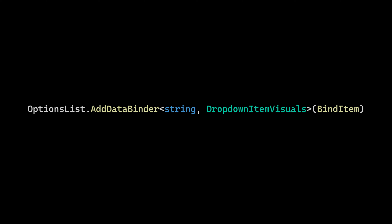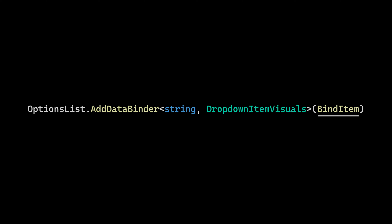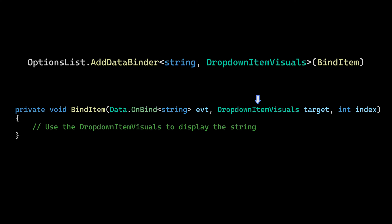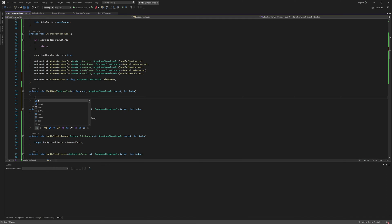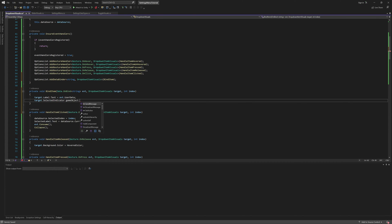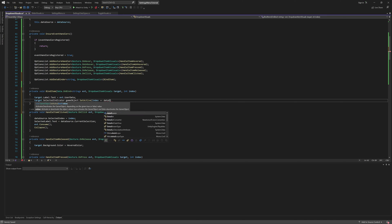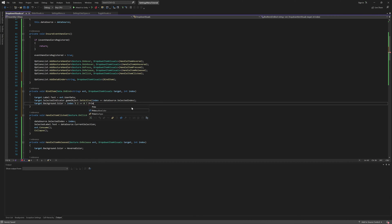The addDataBinder method is a method with two generic arguments. The first generic argument is a data type in the data source, and the second generic argument is the type of the item visuals that we want to use to represent that data type. By calling this method with these arguments, we're telling the list view: whenever you see an item in the data source of type string, hand us a list item prefab with a drop-down item visuals on it. When the list view eventually invokes this callback, it will provide us with both the string from the data source that we want to display, along with the drop-down item visuals object we'll use to display it. This gives us the opportunity to bind the string to the prefab by updating the label's text to display the option from the user data field of the onBind struct, setting the selected indicator's active state based on whether the index is equal to the setting's selected index, and changing the item's background color based on whether the index is even or odd.